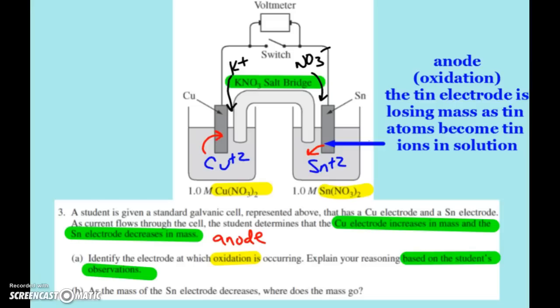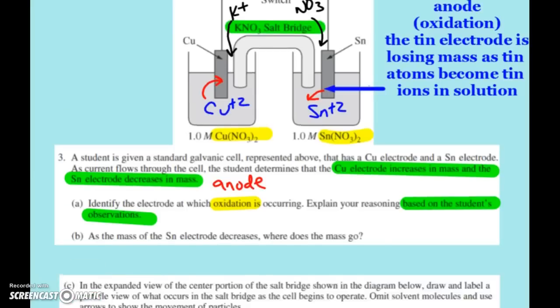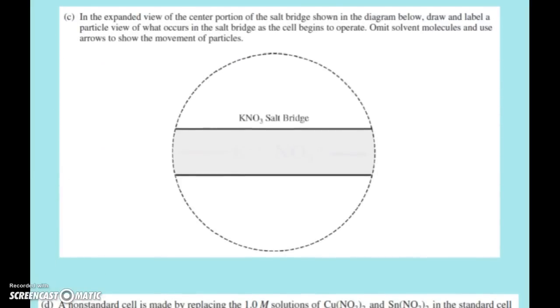And remember, this is all done to keep the charges balanced so that the cell can keep working. So in our drawing, the potassium ions are going to the left, the nitrate ions are going to the right.